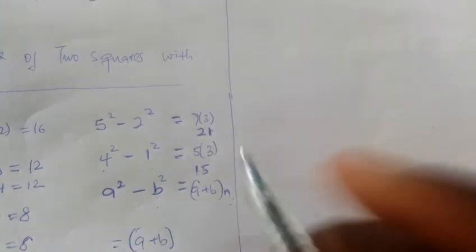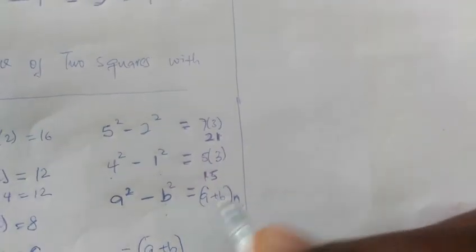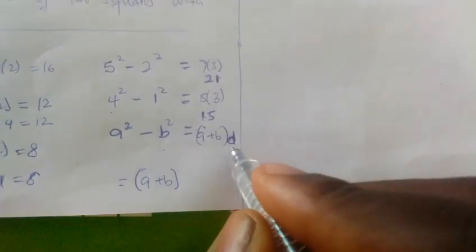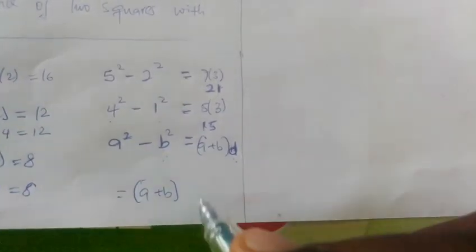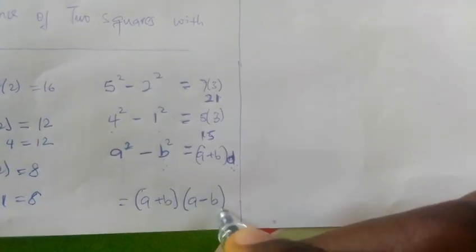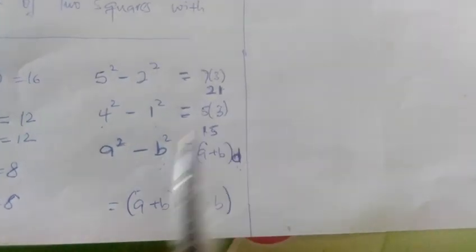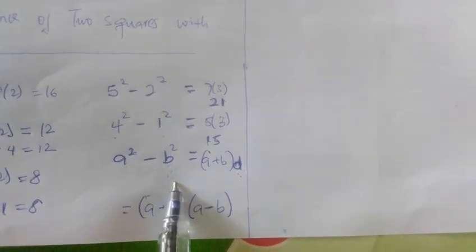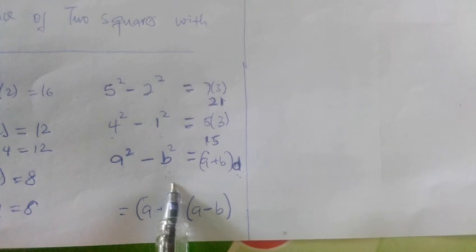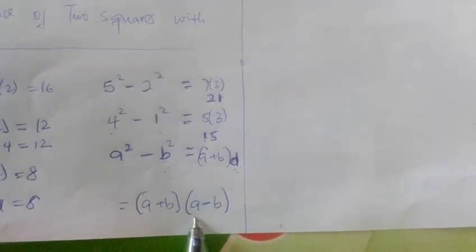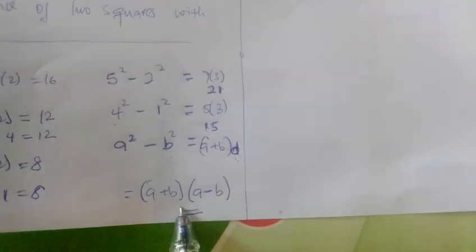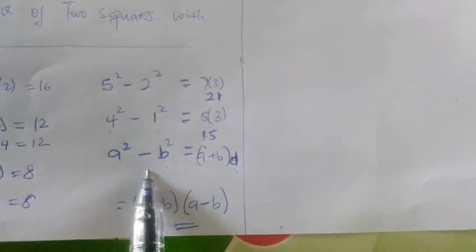Now in difference of two squares, we said a squared minus b squared equals a minus b times a plus b. So a plus b times n is my solution, where n is the difference — which is a minus b. So a plus b times the difference gives a squared minus b squared, when the difference d equals a minus b. That is the proof, and by expansion you'll get the same answer.